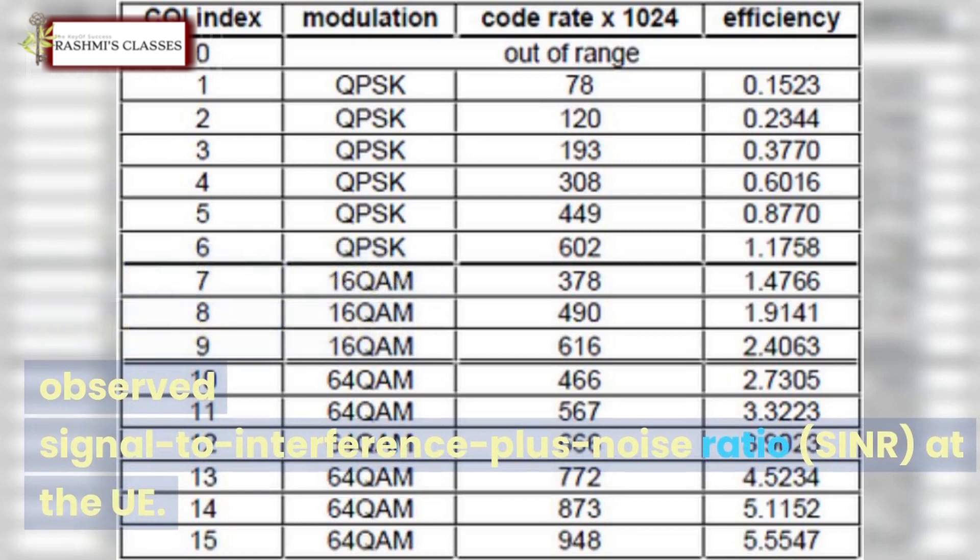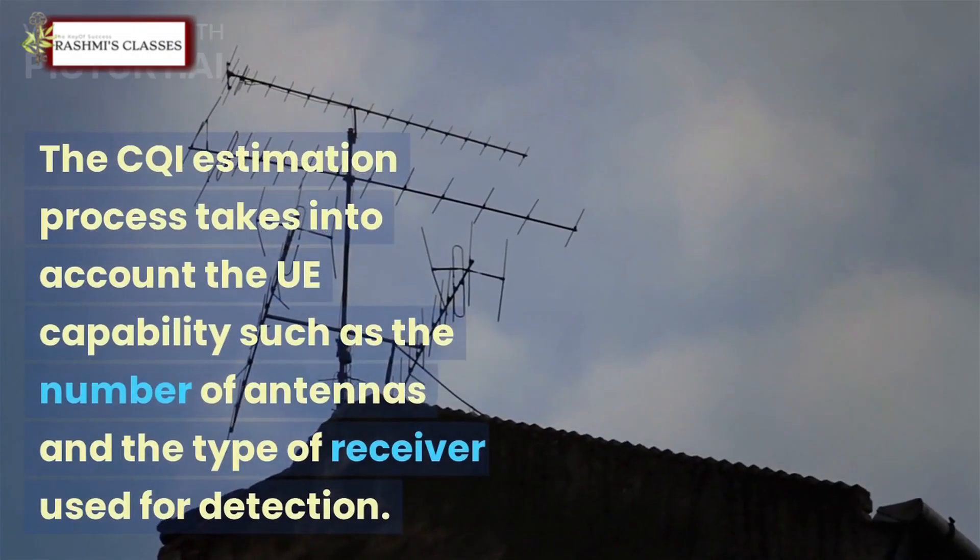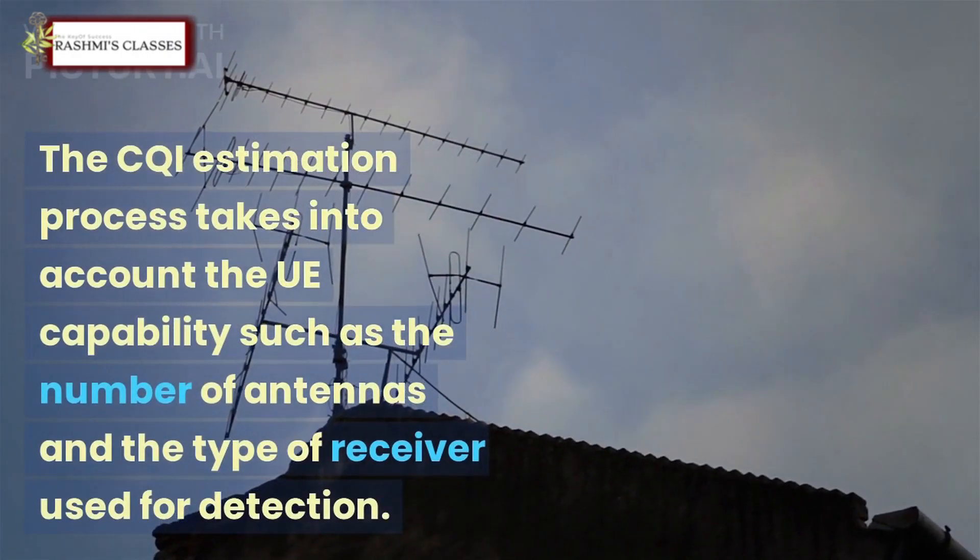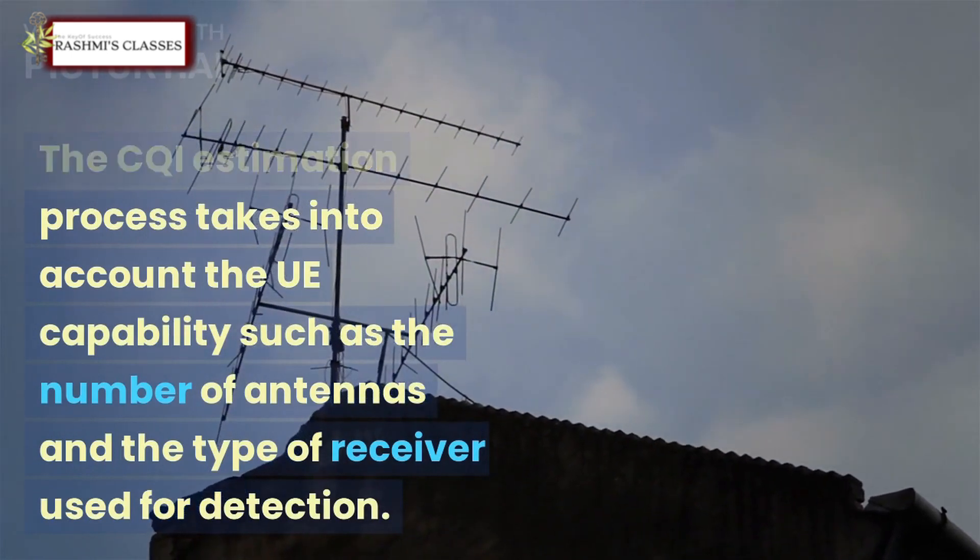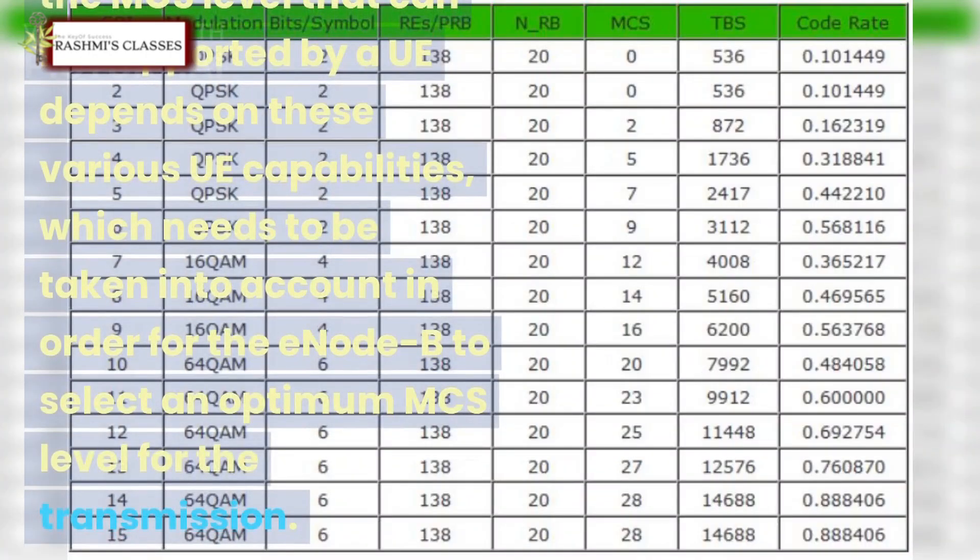The CQI estimation process takes into account the UE capability such as the number of antennas and the type of receiver used for detection. This is important since for the same SINR value, the MCS level that can be supported by a UE depends on these various UE capabilities which needs to be taken into account.